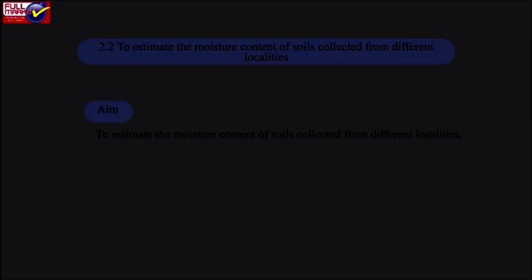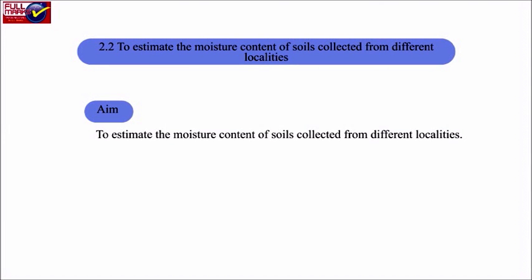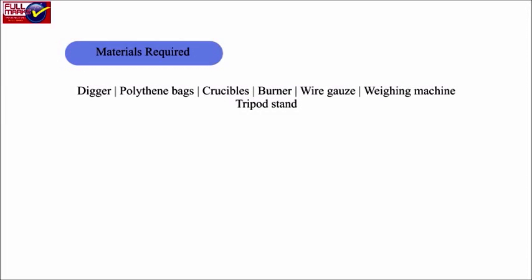2.2 To estimate the moisture content of soils collected from different localities. AIM: To estimate the moisture content of soils collected from different localities. Materials required: digger, polythene bags, crucibles, burner, wire gauze, weighing machine, tripod stand.